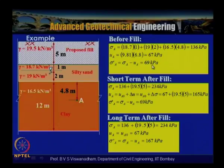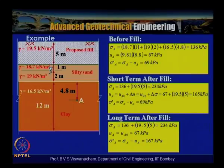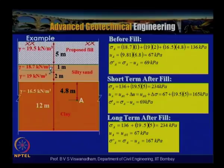Shortly after placing the fill: total stress σA = 136 + 19.5×5 = 234 kPa; Δσ ≈ 100 kPa. Since drainage has not yet started, pore water pressure Ua = 67 + 19.5×5 = 165 kPa. Because drainage has not started, effective stress remains constant at σ'A = σA − Ua = 69 kPa.